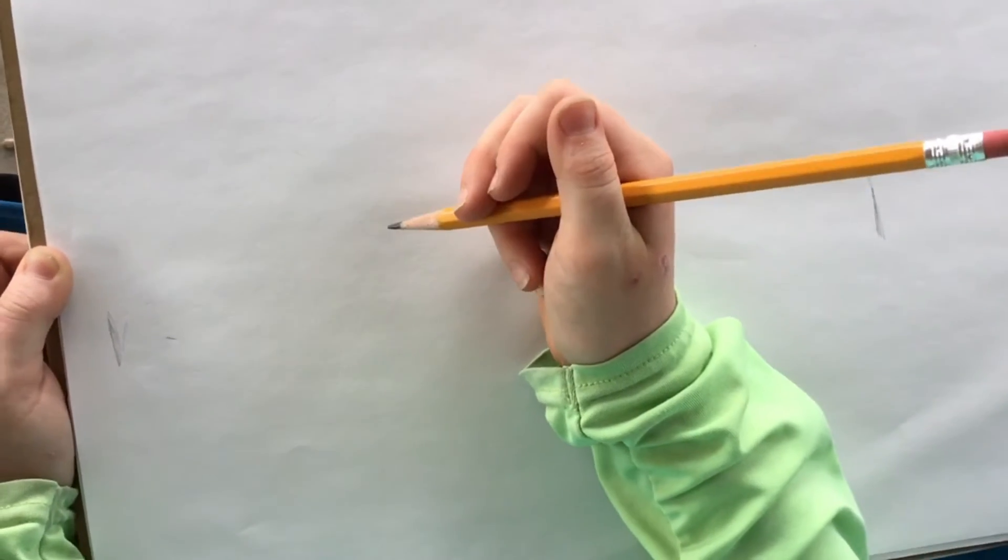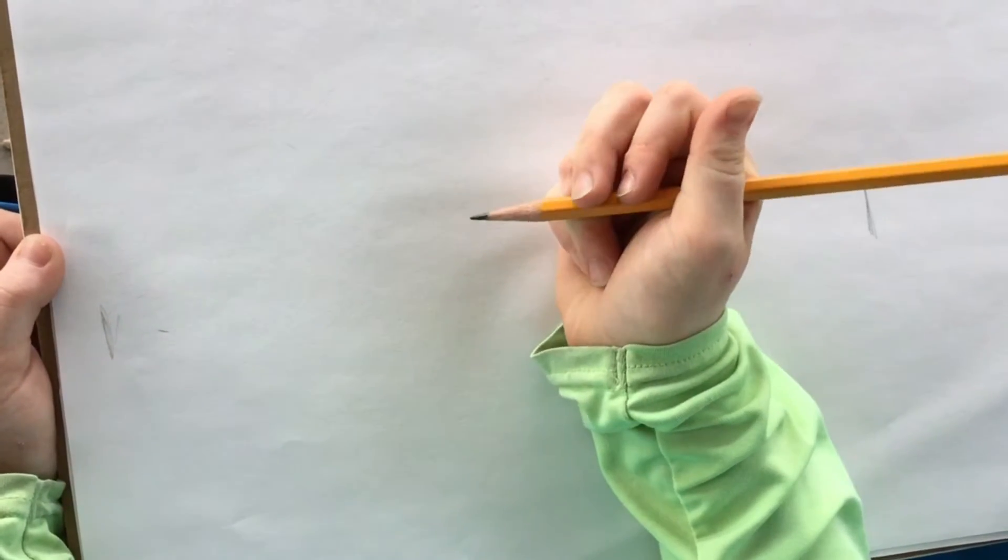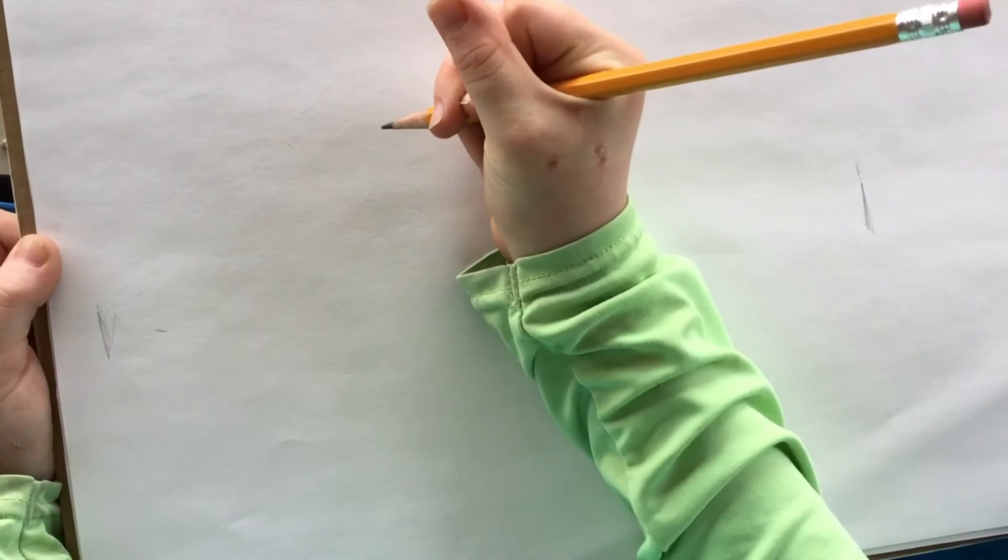Today I'm going to teach you how to draw a horse. So first you want to do a u-shape.